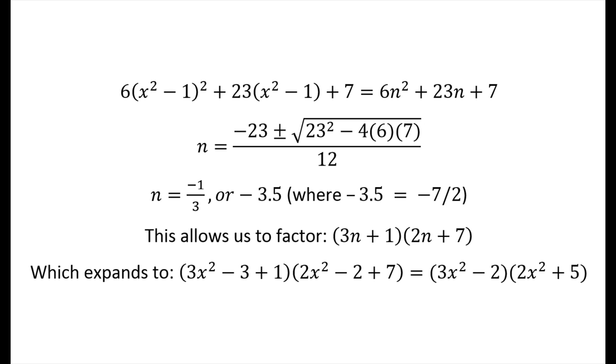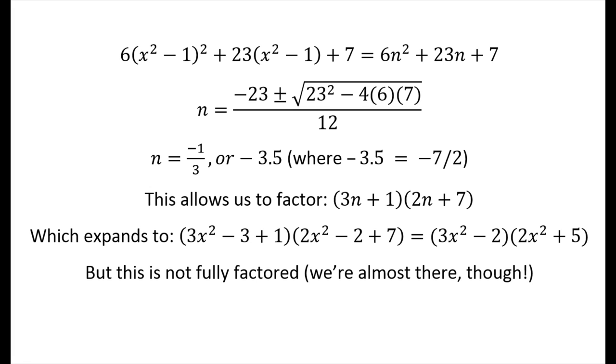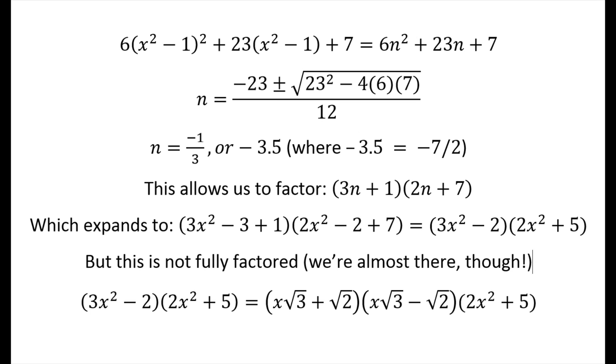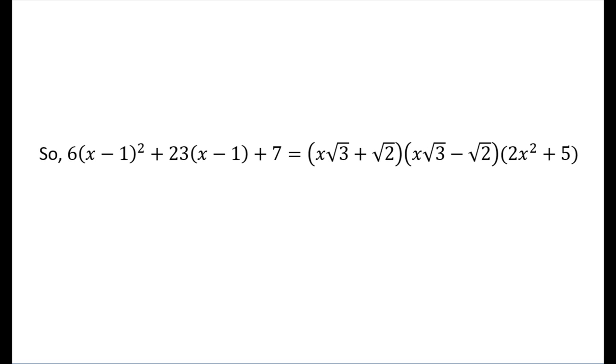But, of course, we're not quite done. 3x squared minus 2 is kind of like a difference of squares, even though the 3 and the 2 don't appear to be perfect squares. But that's fine. We can work them out into square roots. And notice now, we have three factors, and two of them actually giving real roots. The 2x squared plus 5 will not give real roots. And so, finally, this is our fully factored expression.